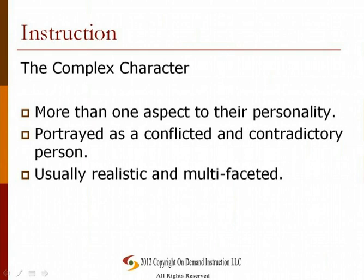A complex character is a character that has more than one aspect of their personality. This type of character is often portrayed as a conflicted and contradictory person. They are usually realistic and multifaceted. Different motivations come into play in different situations, and they usually change or grow as a result of the story's actions. Sometimes they will learn something about themselves, other people, or the world as they struggle to resolve their conflicts. The changes this type of character undergoes contributes to the meaning of the story.